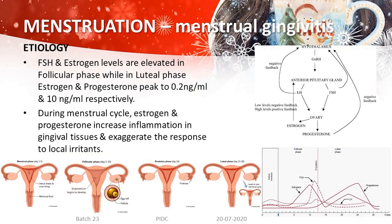The next condition is menstrual gingivitis. Before discussing it, the hormones mainly involved in a female's life during the menstrual cycle should be understood. Under the influence of gonadotropin-releasing hormone, the anterior pituitary gland releases luteinizing hormone and follicle-stimulating hormone. Under the influence of these, the ovary produces estrogen and progesterone, which are responsible for numerous changes in a female's body, including changes in the gingiva. The menstrual cycle is divided into two phases: the follicular phase and the luteal phase.